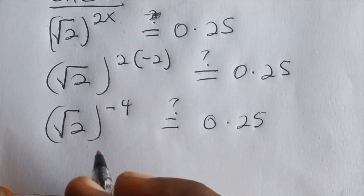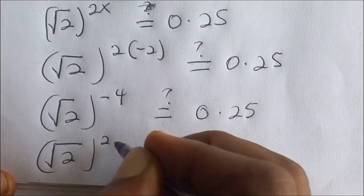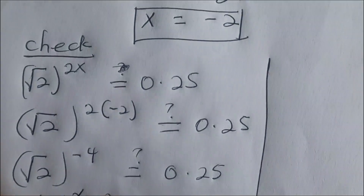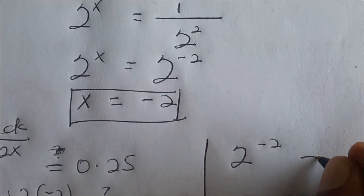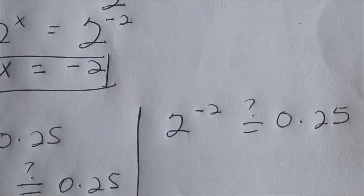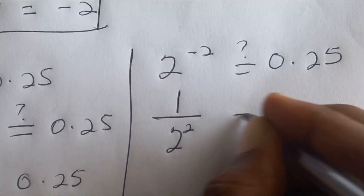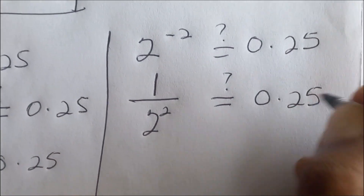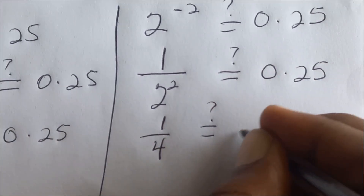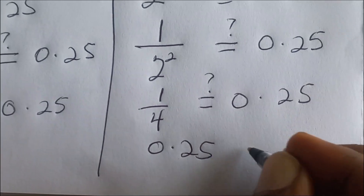So now we are having root 2 into bracket 2 multiplied by negative two, so that the two will cancel. So we are having 2 exponent negative two. Is it equal to 0.25? We can rewrite this as 1 on 2 exponent 2, which is 1 on 4. And 1 on 4 is the same as 0.25 — yes! So indeed our x is equal to negative two.